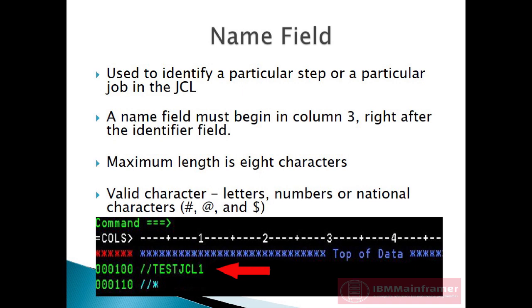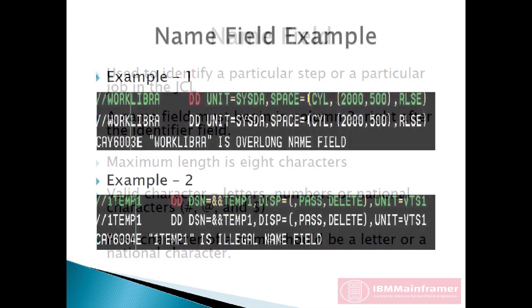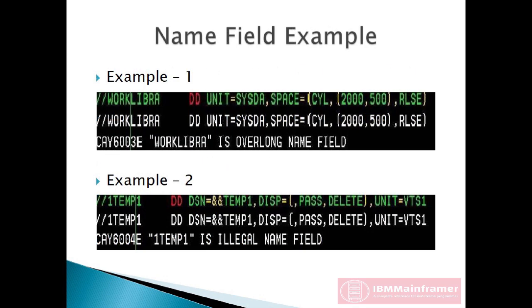The characters may be letters, numbers, or national characters: hash, at, and dollar. Also, the first character of a name should be a letter or a national character. In this example, work Libra is the name field and it is length 9 characters. The name field should be 8 character length, so this is an incorrect name field.